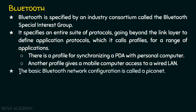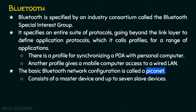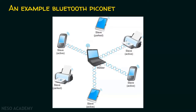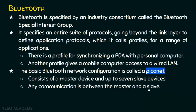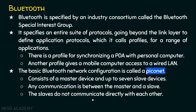The basic Bluetooth network configuration is called a Piconet. Here is an example Piconet where we have a master node connected with many slave nodes. In a Piconet, there is only one master node and up to seven slave nodes. Any communication is between the master and the slave — no two slave nodes can communicate with each other directly. Slaves do not communicate directly with each other, and a slave can be parked — that is, set to an inactive low power state.